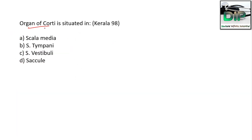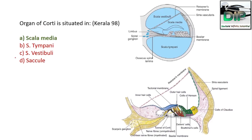Next question. The organ of Corti is situated in: Option A scala media, Option B scala tympani, Option C scala vestibuli. The correct answer is scala media. The organ of Corti is bounded by the basilar membrane at the base, the Reissner's membrane separates it from the scala vestibuli, and the stria vascularis secretes endolymph. There is a tectorial membrane inside which there are outer hair cells and inner hair cells.